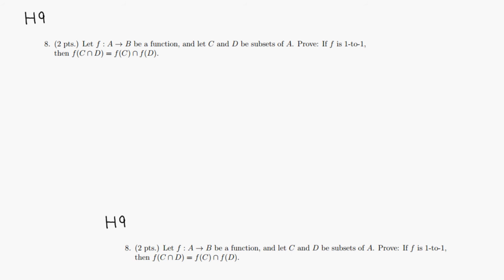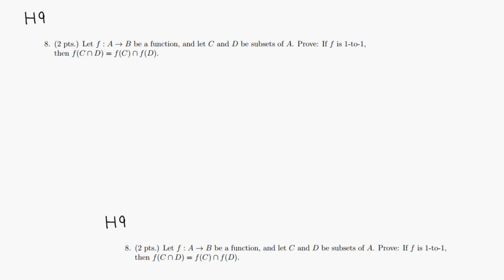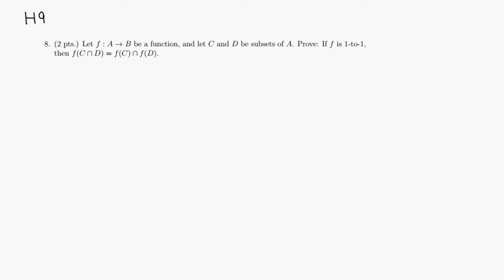Let's look at homework 9, problem number 8. You have a function from A to B, and C and D are subsets of A. Prove that if F is one-to-one, then F of C intersect D is equal to F of C intersect F of D.